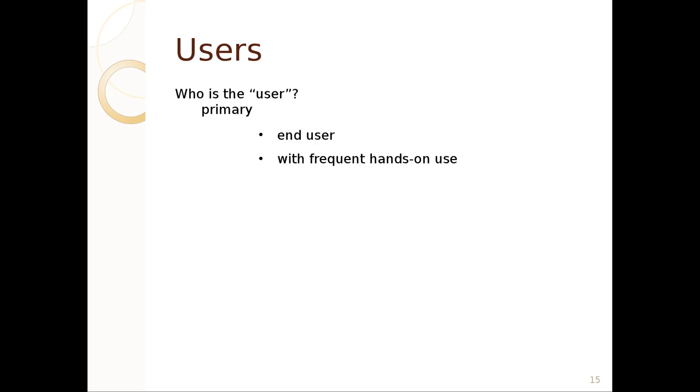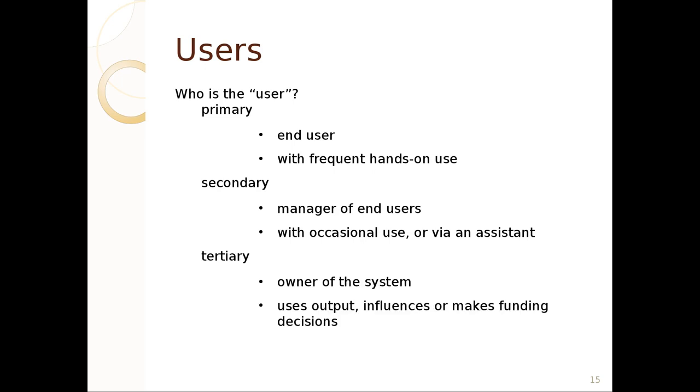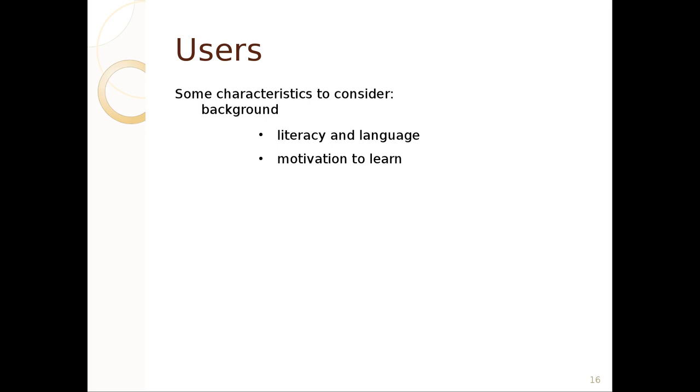The user is typically the end user in a primary setting. They're the end user and they have frequent hands-on use. They might not be the person buying. They might not be the person paying for it. A secondary user would be the managers of the end users. They might use it occasionally. They might use an assistant. They might use an admin interface. Then, there's tertiary users. They might be the owners of the system. They use the outputs. Maybe they rely on some of the analysis of the system. Nonetheless, they sometimes are the people who pay for the system and thus are responsible for setting priorities or setting how much they feel things are worth.